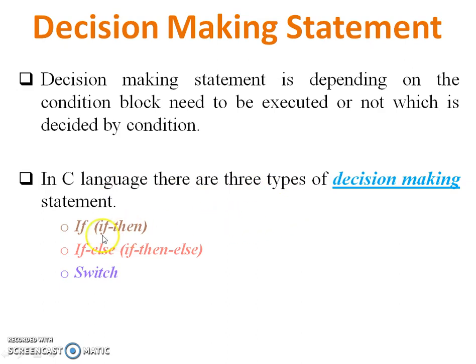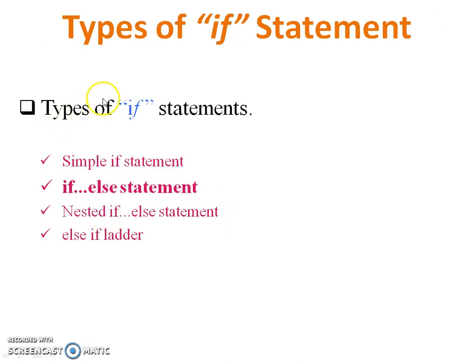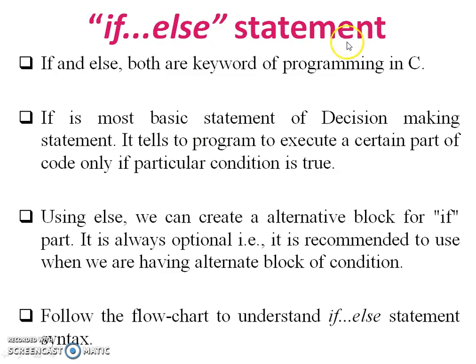The three types are: if, if-else, and switch. Today I will cover the if-else statement. In if-else statement, both are keywords of C programming. If is the most basic decision making statement.